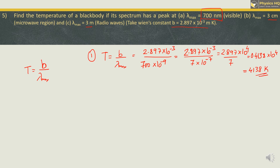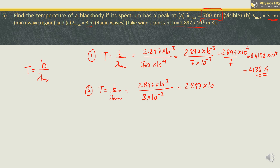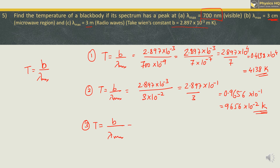For the second case: T = b/λmax = 2.897 × 10⁻³ / (3 × 10⁻²) = 2.897 × 10⁻¹ / 3 ≈ 0.9656 × 10⁻¹ = 9.656 × 10⁻² Kelvin. For the third case: T = 2.897 × 10⁻³ / 3 ≈ 0.9656 × 10⁻³ = 9.656 × 10⁻⁴ Kelvin.